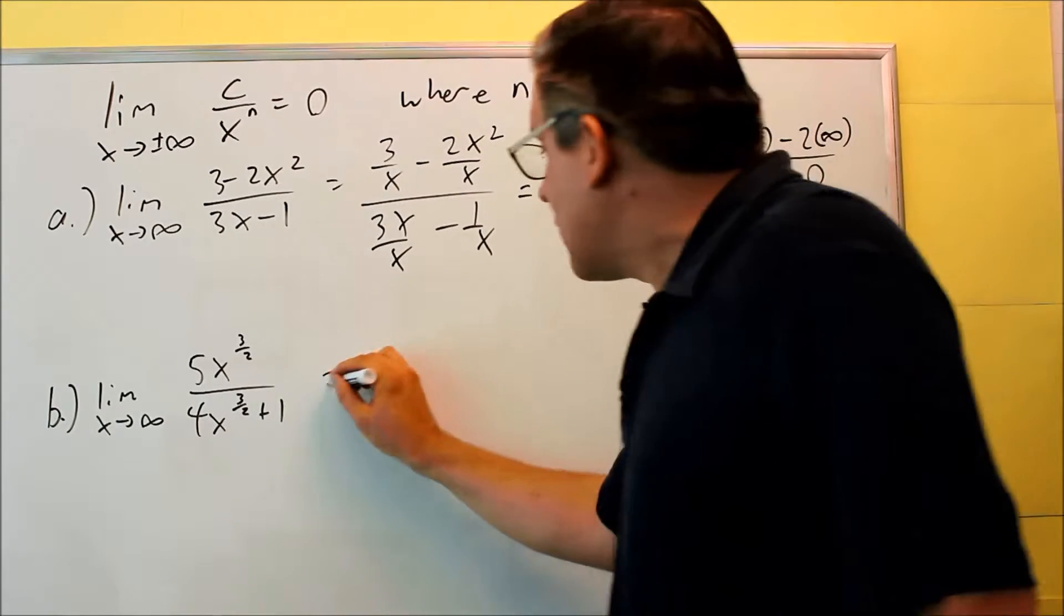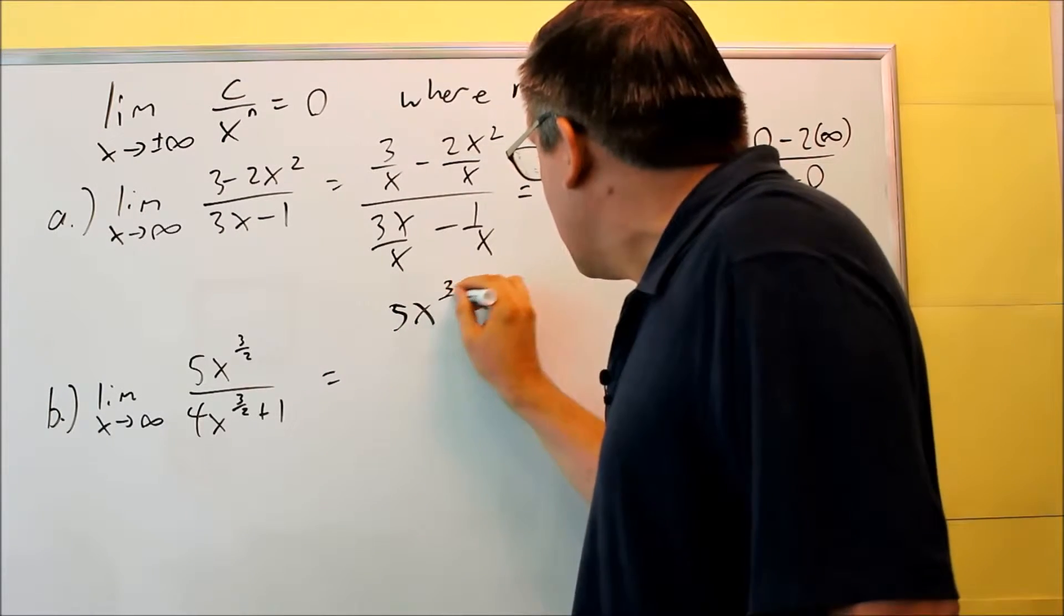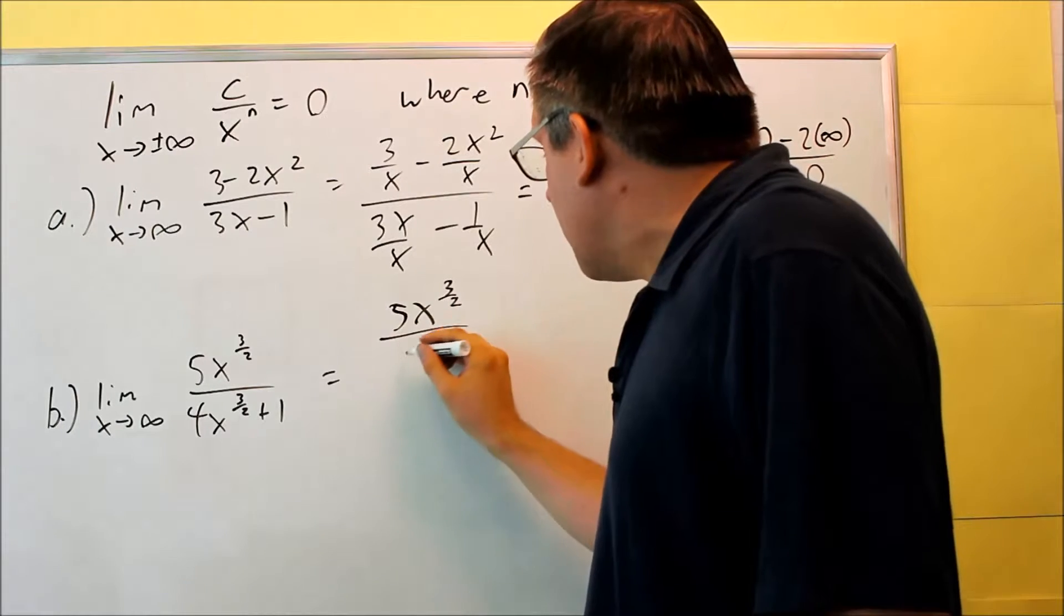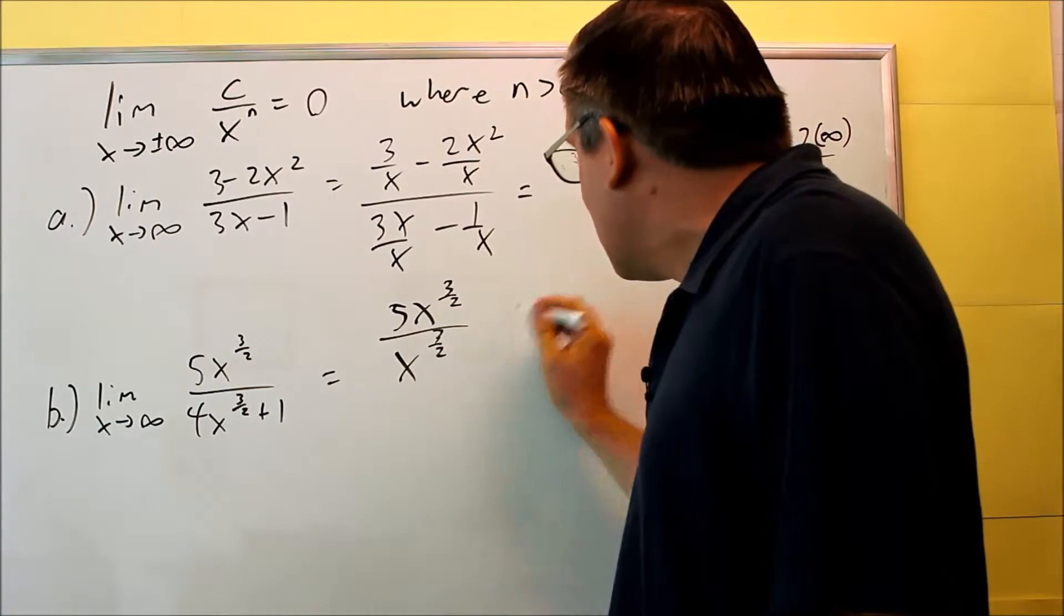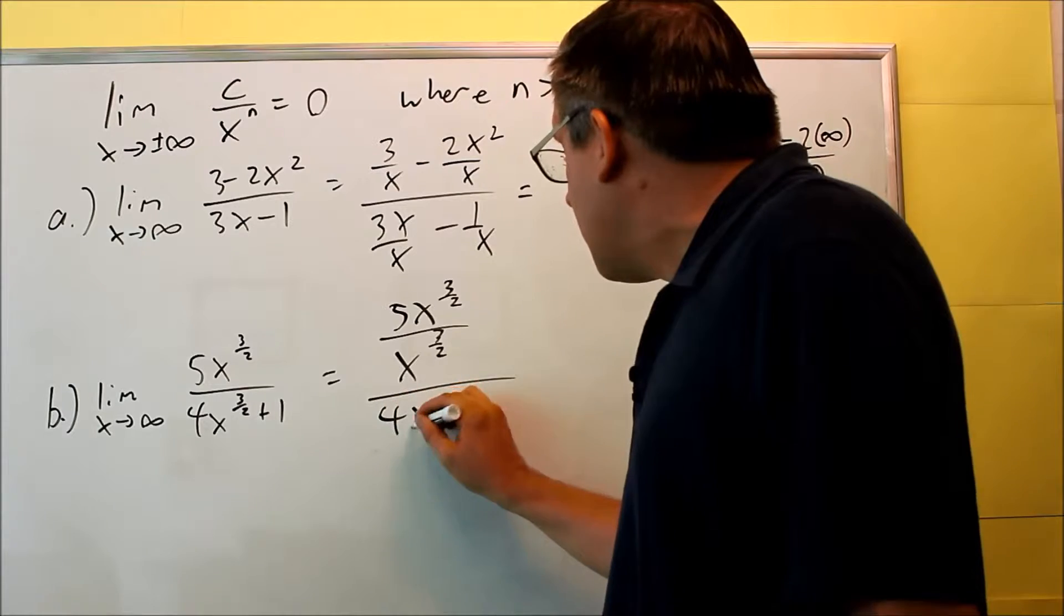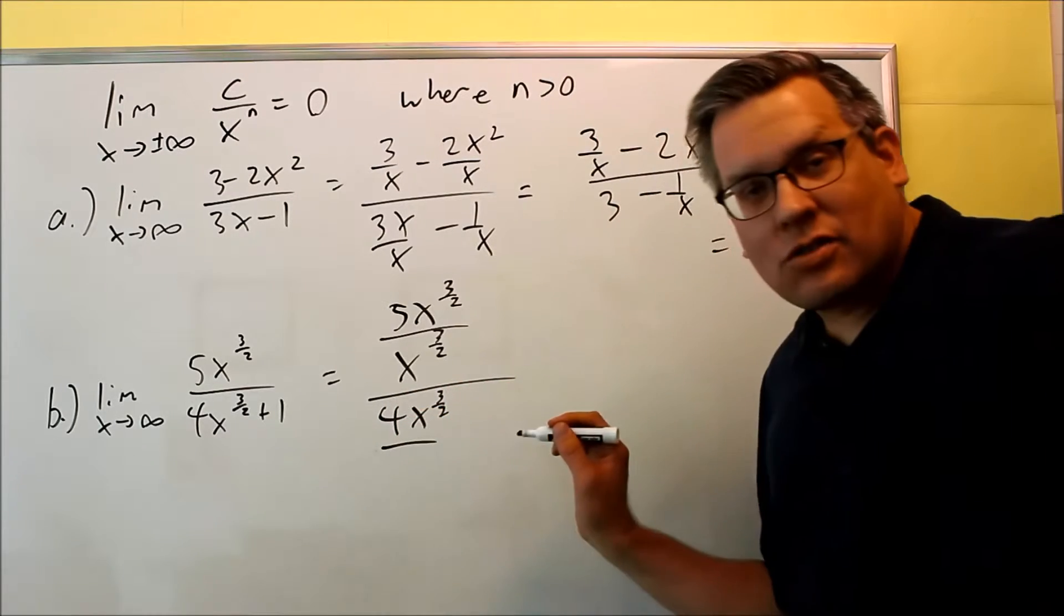Again, on the bottom, same thing, divide top and bottom by the highest power in the denominator, which would be x to the 3 halves. So we're dividing everything top and bottom by x to the 3 halves.